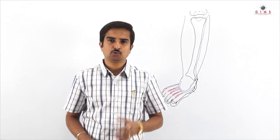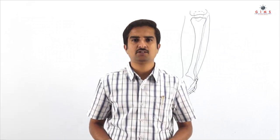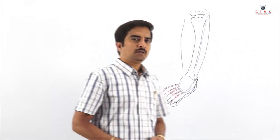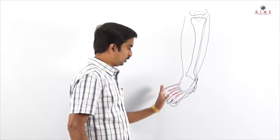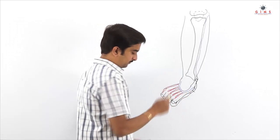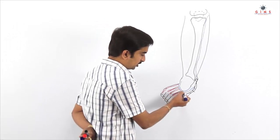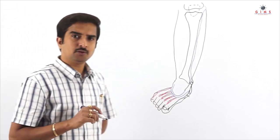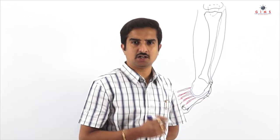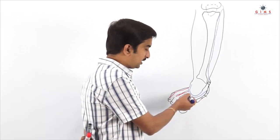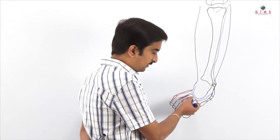We begin our discussion today in the superficial fascia with the superficial veins of the front, lateral, medial, as well as the dorsum of the foot. In the dorsum of the foot, the venous arch you see here is called the dorsal venous arch. The anatomical location of the dorsal venous arch is at the proximal parts of the metatarsal bones.